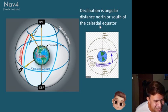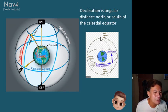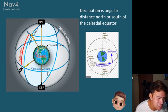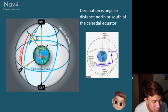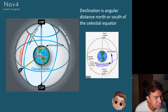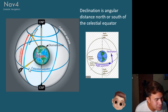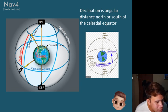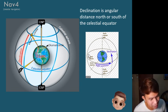Declination is the angular distance north or south from the celestial equator. From the celestial equator measured up to the star you are observing — that is your declination.